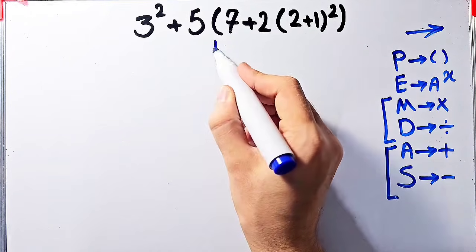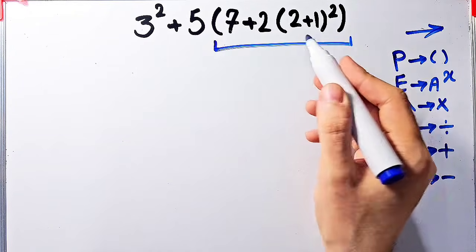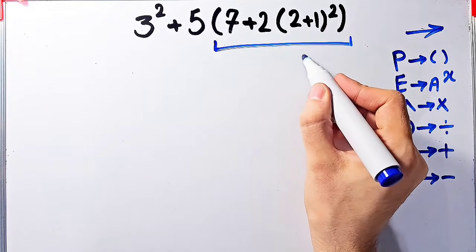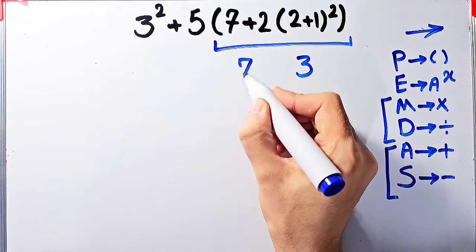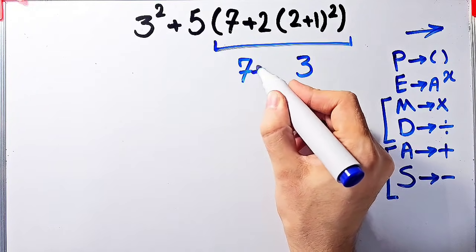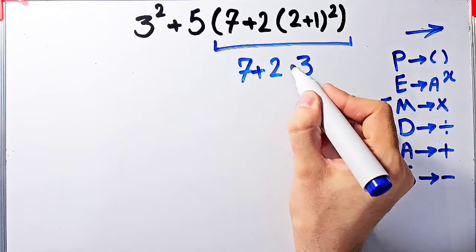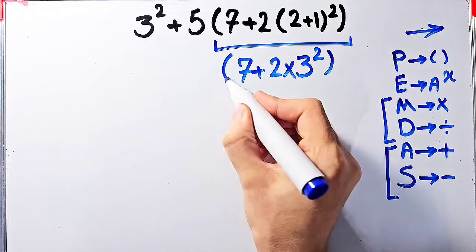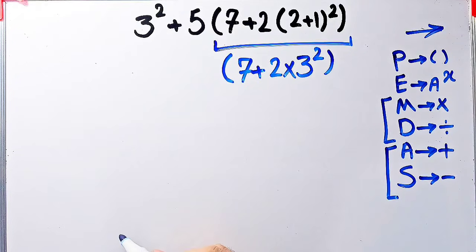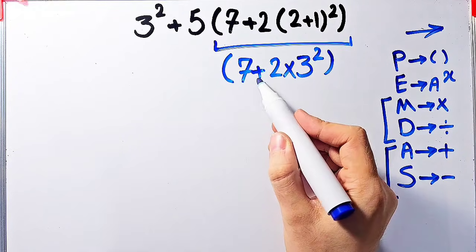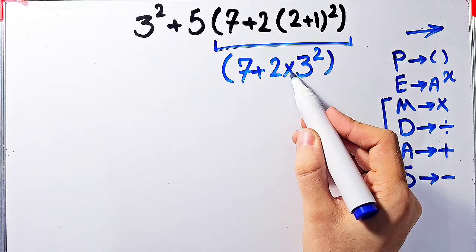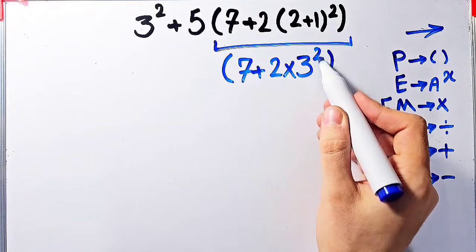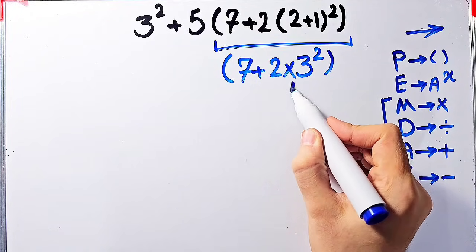According to the PEMDAS rule, first we simplify the parentheses. Inside these parentheses we have another parentheses: two plus one equals three. Now we have seven plus two, then times three to the power of two, inside these parentheses. Now we have addition, multiplication, and exponent. First we simplify this exponent: three to the power of two equals nine.